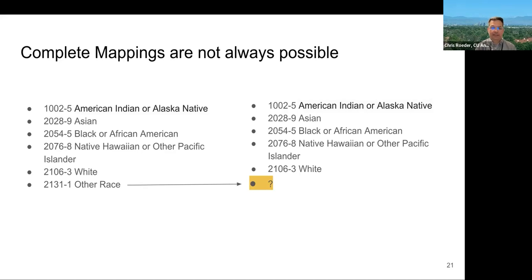And here's an interesting issue or situation you might run into. If you have one schema that uses the list of races on the left that includes the value other, and you're mapping to a schema that, for whatever reason, shows a value set that doesn't include other, and I've seen this, what do you do with those values? You probably don't map them because you can't.